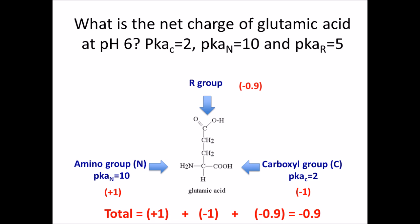That brings me to the final slide: what is the net charge of glutamic acid? You take the sum of all three groups added together — plus 1 for the amino group, minus 1 for the carboxyl group, and negative 0.9 for the R group — which equals a net charge of negative 0.9.